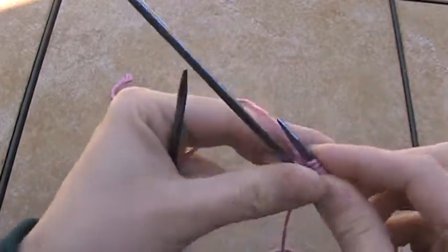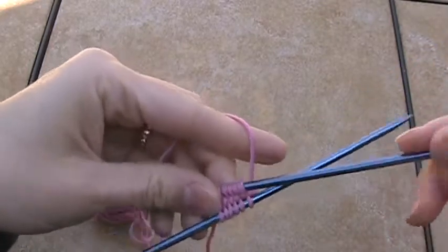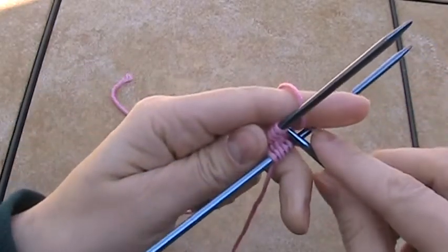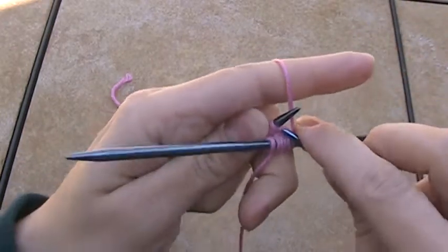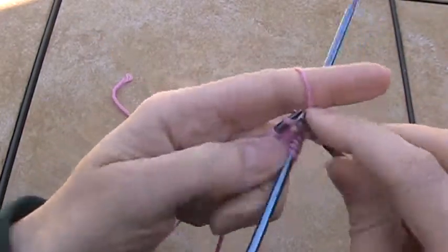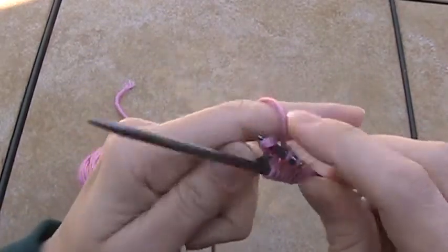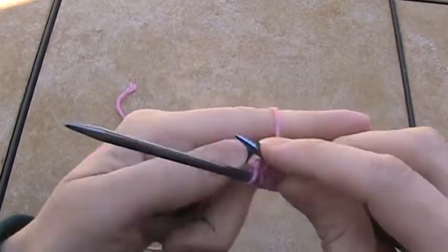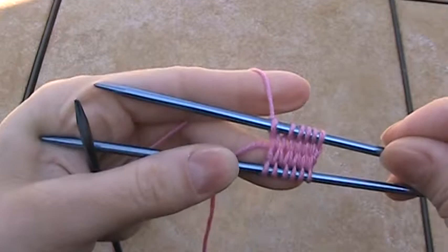And then to start your second needle, cock that first needle out of the way. And knit the stitches off of the second needle. And that will finish up your first round. And you'll have a little patch of knitting that looks like that.